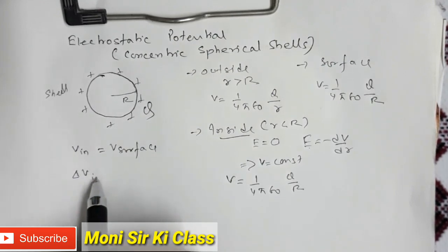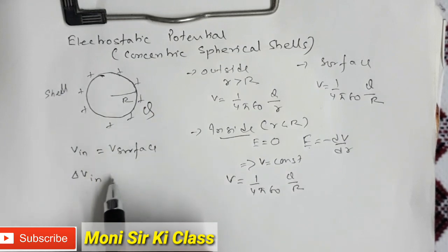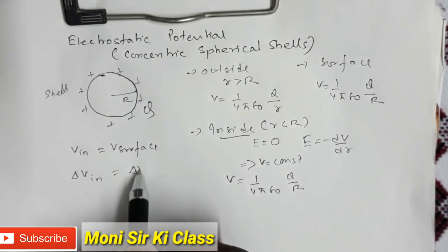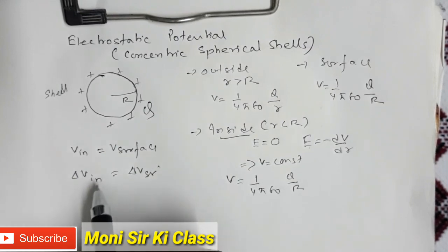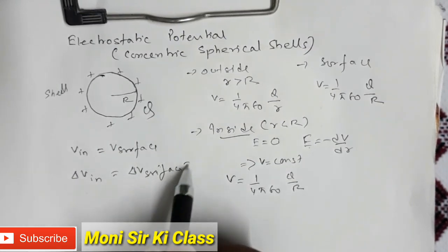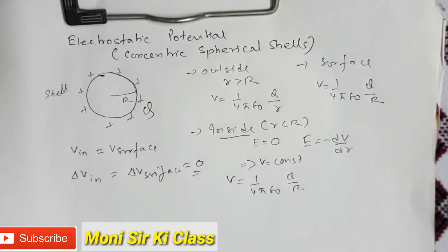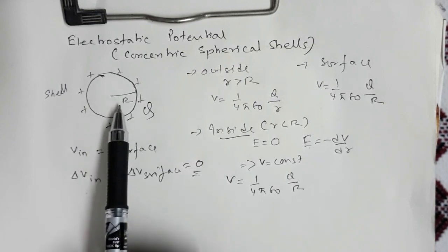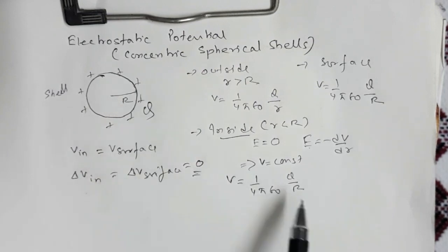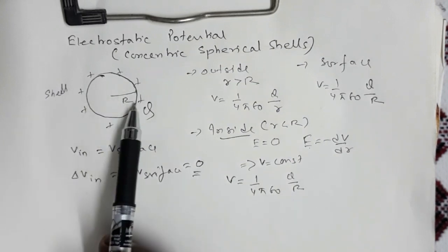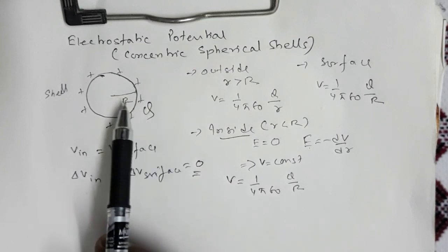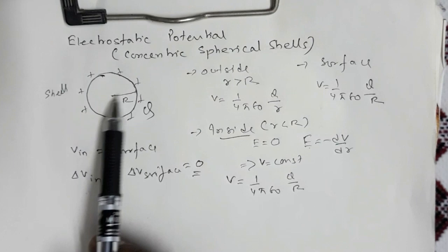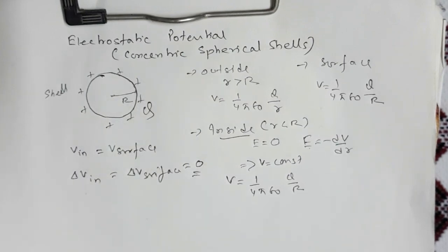The potential difference between any two points inside equals the potential difference between any two points on the surface. Since potential is constant, the potential difference is zero — the surface is equipotential and so is the interior. At any point inside, the distance term used in the potential expression equals the radius; at any point outside, the distance term equals the distance from the center to the point of observation.